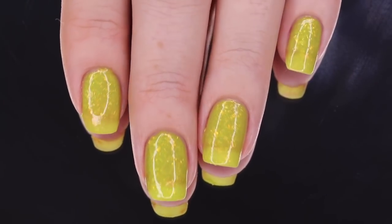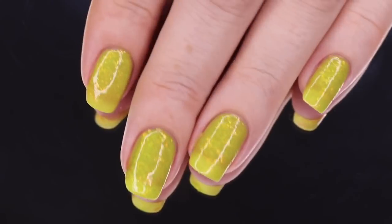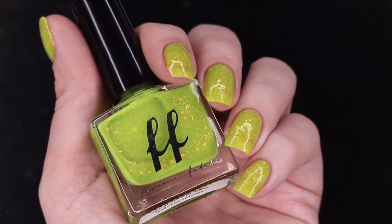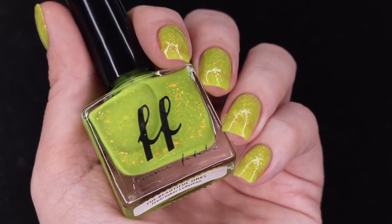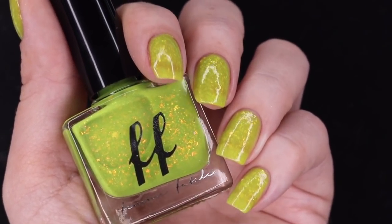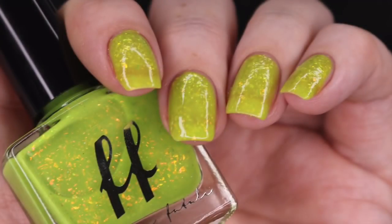Here is a look at that completed mani at three coats before a glossy top coat underneath artificial lighting. Those flakes do make a minimal amount of texture. One coat of your favorite glossy top coat will smooth that right out. This is my final swatch photo at an angle underneath artificial lighting.